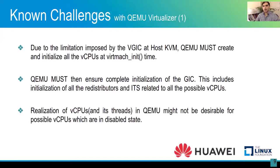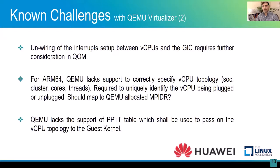At the QEMU level, because of the limitation imposed by VGIC at the host KVM level, QEMU must create and initialize all VCPUs at VM init time. This has a ripple effect: QEMU must then also ensure complete initialization of the GIC, including initialization of all redistributors related to all possible VCPUs. Realization of VCPUs and their threads in QEMU might not be desirable for possible VCPUs that are in a disabled state.